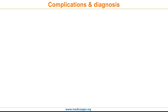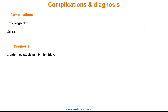Moving forward to complications and diagnosis of Clostridium difficile. There are two major complications: the first is toxic megacolon, and the second is sepsis. For diagnosis, we first need to establish colitis — defined as more than three loose stools per 24 hours for more than two days.